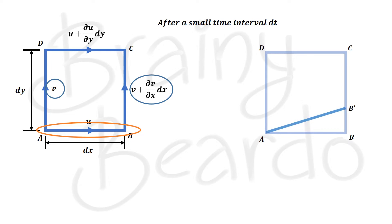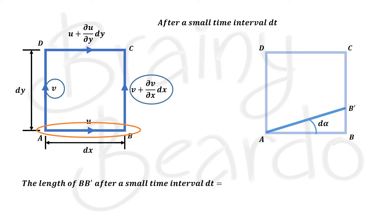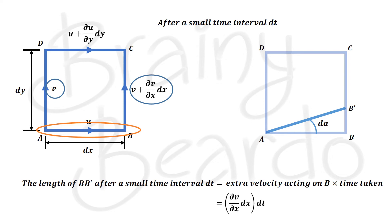This means AB rotates by a small angle, which we call dα. The length of BB′ after a small interval of time dt can be found since velocity equals distance divided by time, so distance equals velocity times time. The extra velocity acting on B is (∂v/∂x)·dx, therefore the length BB′ equals (∂v/∂x)·dx·dt.